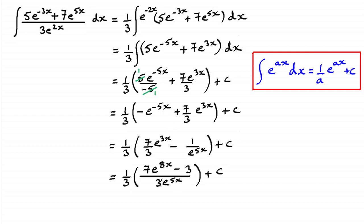I can bring that 3 out as another third. A third times a third would be 1 ninth. I could leave the e to the 5x underneath here. I'm going to bring it all out the front. And we get 1 over 9e to the 5x times all of 7e to the 8x minus 3 plus that constant of integration. So hope you've been able to see your way through that.